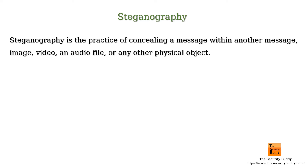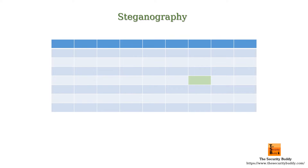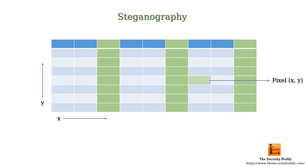For example, let's say there is an image file. The image file can be represented by using a two-dimensional or three-dimensional matrix. Each entry in the matrix may represent the intensity value of the corresponding pixel. Now if we change these pixel values very slightly, the change may not be visible to the normal human eye. So one can change, let's say, the pixel value of every hundredth pixel of an image so that the changed value represents an alphabet.